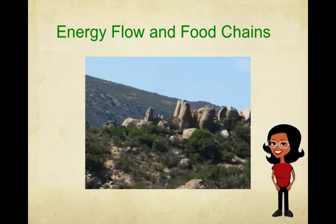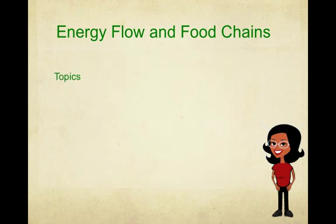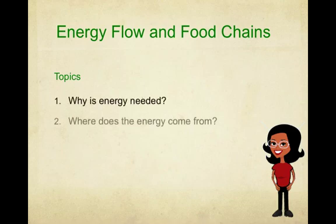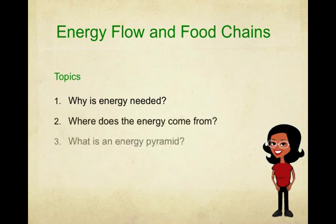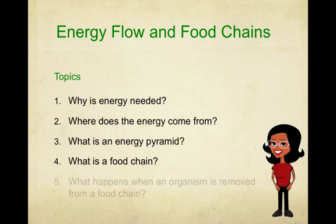These systems of organisms that live together are called ecosystems, and all ecosystems require energy to function. Some of the topics that we're going to cover in this presentation are why is energy needed, where does the energy come from, what's an energy pyramid, what's a food chain, and what happens when an organism is removed. We're going to try and do some predictions about what would happen to a food chain if somebody was removed from the food chain.